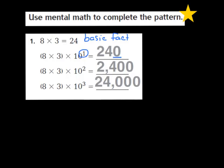Now let's take a look at the second part of this problem. This time they take 8 times 3, and they multiply it by the second power of 10. My exponent is a 2, so to my 24, they've now added two zeros — here's 1 and here's 2. In the next part of the pattern, they multiply 8 times 3 by the third power of 10. My exponent is a 3, and I now have three zeros in my product. That's how I use a basic fact and a pattern to find a product.